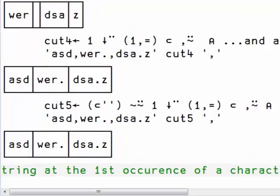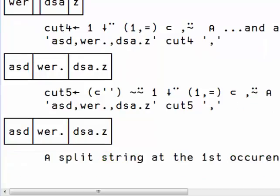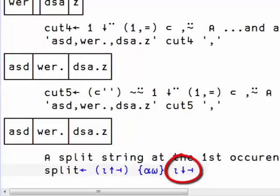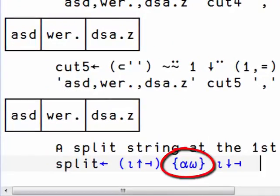In this next example, we want to split a string at the first occurrence of a character. So on the right-hand side, we find where the character is, and we use that to drop from the string. The left function is the same thing, except that we take from the string, and the function in the middle simply glues the two together.